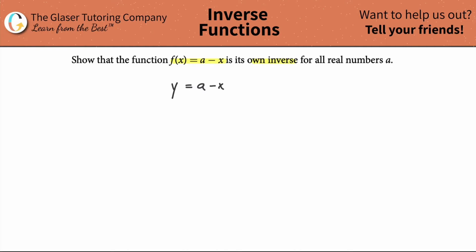What it now means to find the inverse of this function is to simply switch the x's and the y's. In other words, if you have y here, put an x. And if you have x here, put a y. So the new function is going to look like this: x equals a minus y. This right here is now the inverse function.